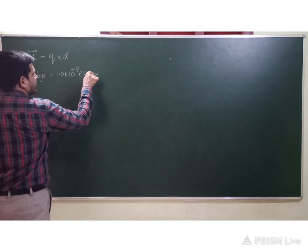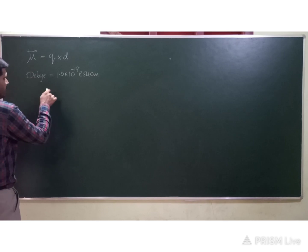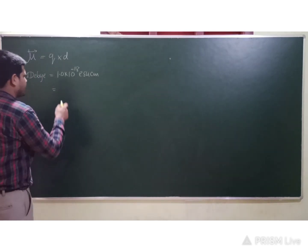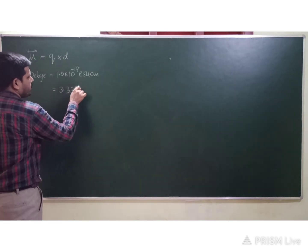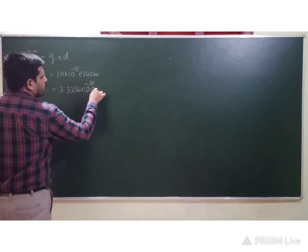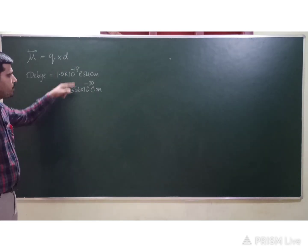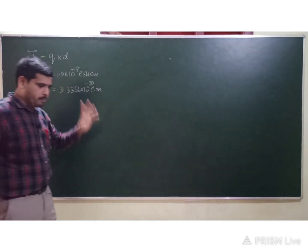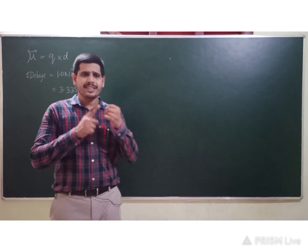Your NCERT book gives the conversion of 1 Debye as 3.336 × 10⁻³⁰ coulomb·meter — a different unit but the same value. If you interconvert, you will get the same result. Now, when do we apply dipole moment? Firstly, it is used to find out the polarity of a bond — the dipole moment value is directly proportional to polarity.